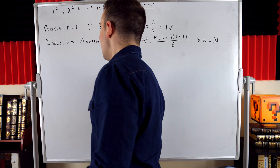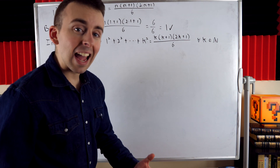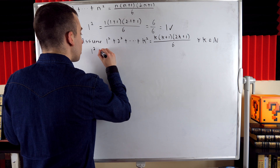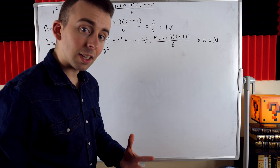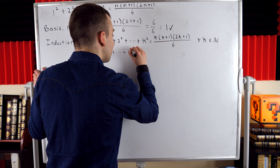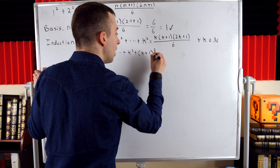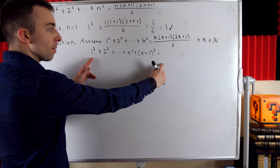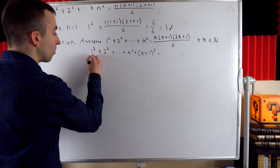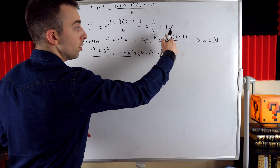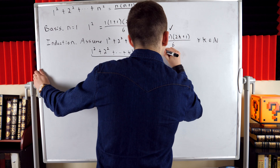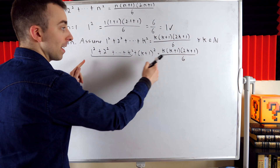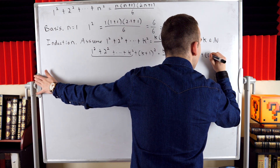Here's our induction hypothesis: the sum of the first k squares equals k times k plus 1 times 2k plus 1, all over 6. Now we want to prove this also holds for k plus 1. The sum of the first k plus 1 squares is 1 squared plus 2 squared up to k squared plus k plus 1 squared. Thanks to our induction hypothesis, we already know the sum of the first k squares equals that expression, so we can rewrite this as k times k plus 1 times 2k plus 1 over 6, plus k plus 1 squared.